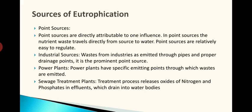Coming to the sources of eutrophication, the first one is point sources. Just like pollution, point sources are sources that originate from a particular point — we can identify from where they are originating. If waste from a particular industry is directly expelled into the water body, we know that waste is coming from that particular industry. We can identify from where that waste is coming — those types of sources are known as point sources.